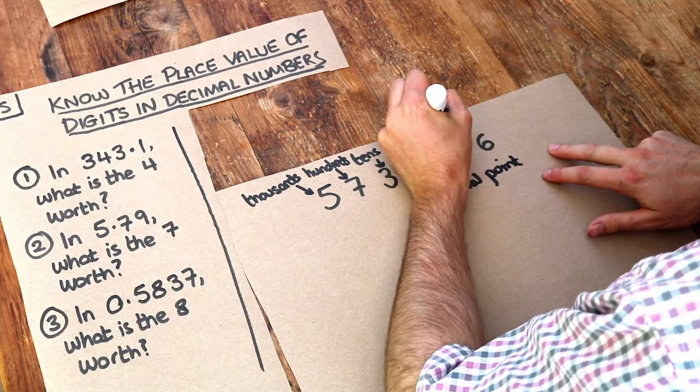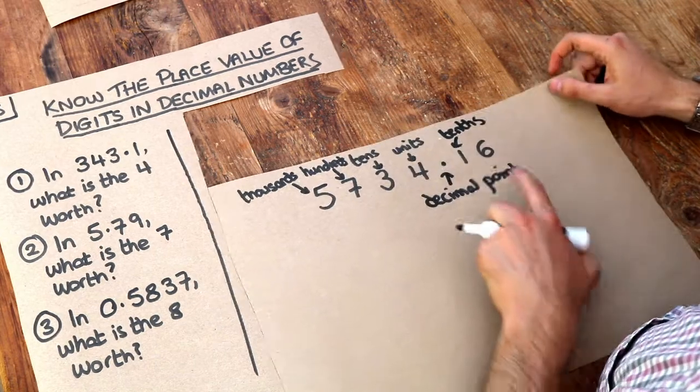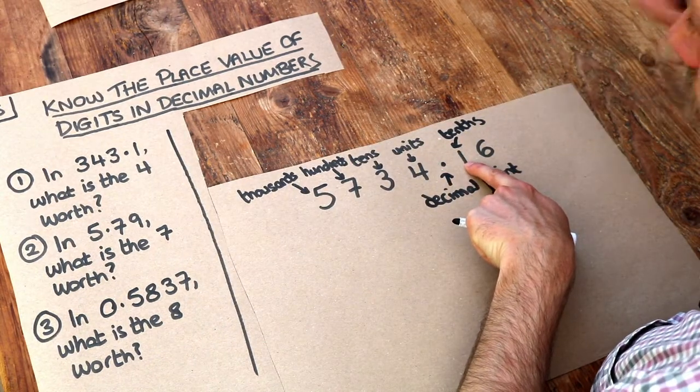This is known as the tenths digit, so that means each of these is worth a tenth of a whole.